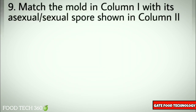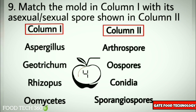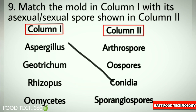Question number nine: Match the mold in column one with its asexual or sexual spore shown in column two. Aspergillus corresponds to conidia; Geotrichum corresponds to arthrospores; Rhizopus corresponds to sporangiospores.